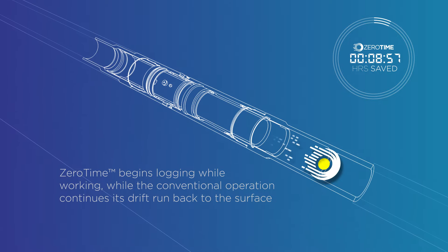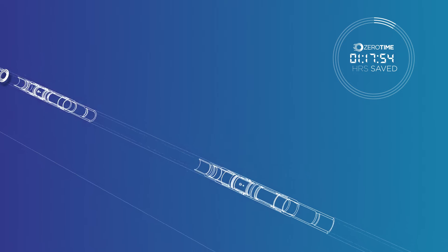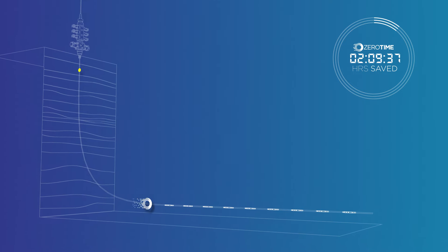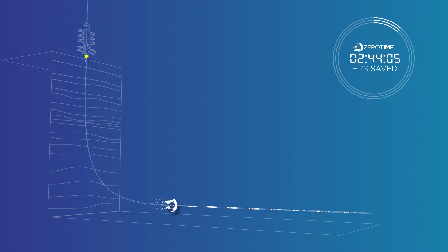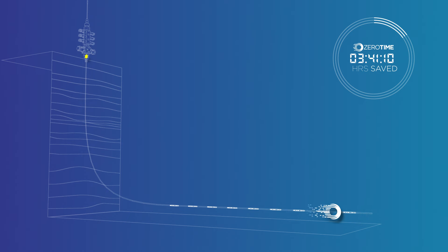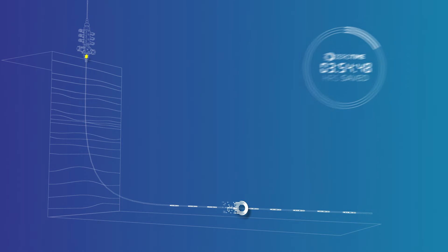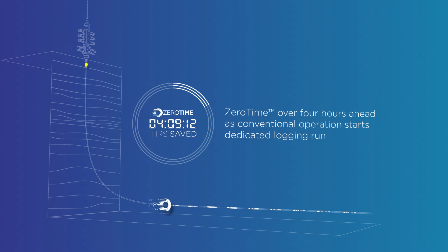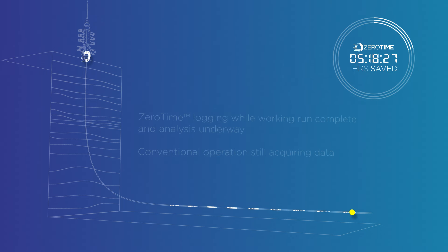ZeroTime begins logging while working, while the conventional operation continues its drift run back to the surface. ZeroTime continues acquiring data by logging while working. In the meantime, the conventional operation loses time preparing for the next run in hole. At this point, ZeroTime is over four hours ahead of the conventional operation, which is only starting its dedicated logging run.